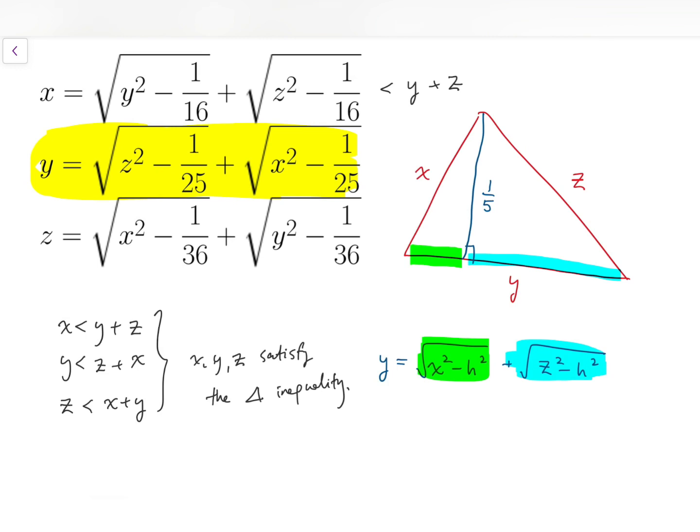And so that means this is one-fifth. When we use a similar argument, I can further deduce that the length of the altitude corresponding to the side with length x should have length equal to 1 over 4, while for the third altitude, corresponding to the side with length z, that should have length 1 over 6.